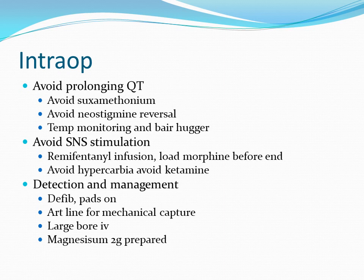Intraoperatively, I would have the defibrillator in the room with pads on. I would insert an arterial line for beat-to-beat monitoring. I would gain large-bore IV access, which may be difficult due to previous drug use, and have 2 grams of magnesium prepared. I would do a modified RSI with rocuronium, avoiding suxamethonium. I would use remifentanil to obtund the sympathetic response to laryngoscopy. I would use sevoflurane for maintenance — although it prolongs QTc, it is not torsadogenic. I would use a bear hugger and temperature monitoring to avoid hypothermia, maintain heart rate goals of 60 to 100, closely monitor for ventricular arrhythmias, and avoid hypercapnia and ketamine. I would load with 10 to 20 milligrams of morphine at the end of the case as the patient has opioid tolerance.